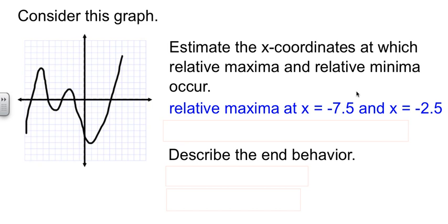Somewhere around negative 7. I just picked negative 7.5. If you're in the right neighborhood, I'm going to cut you slack and say it's good. You don't have to be exactly dead on the money. Now here's another one where there's a max somewhere between negative 2 and negative 3. I just called it negative 2.5.